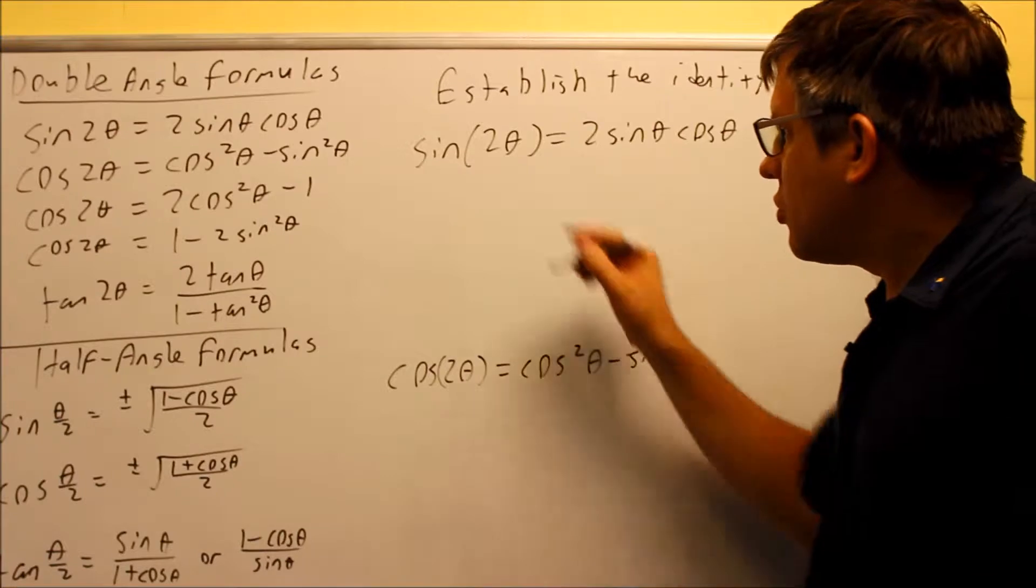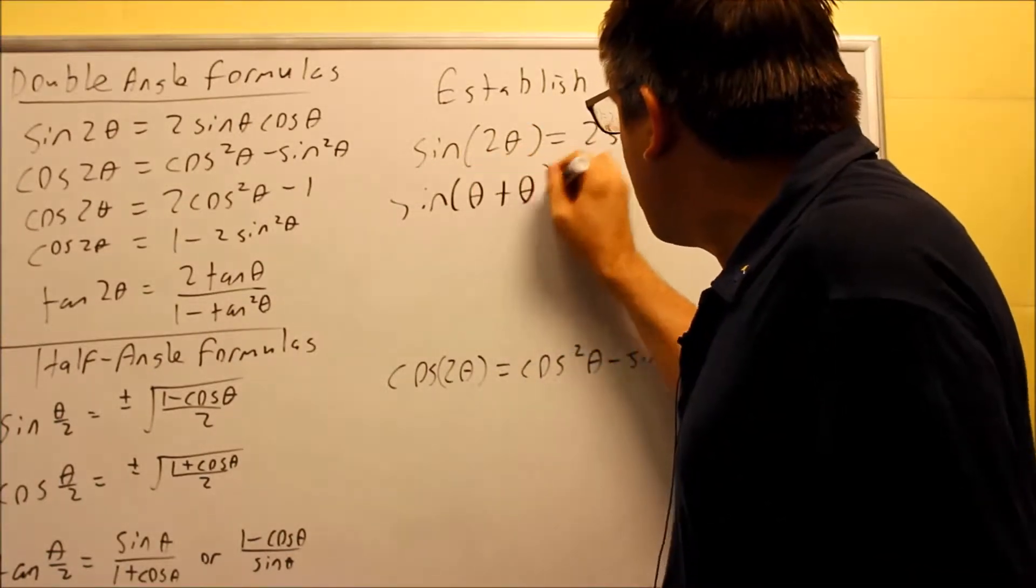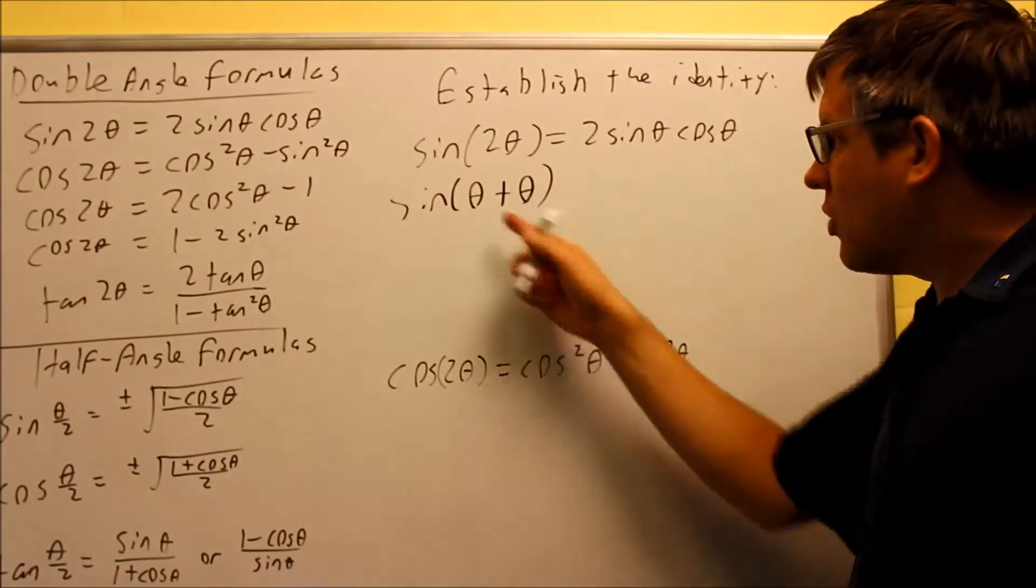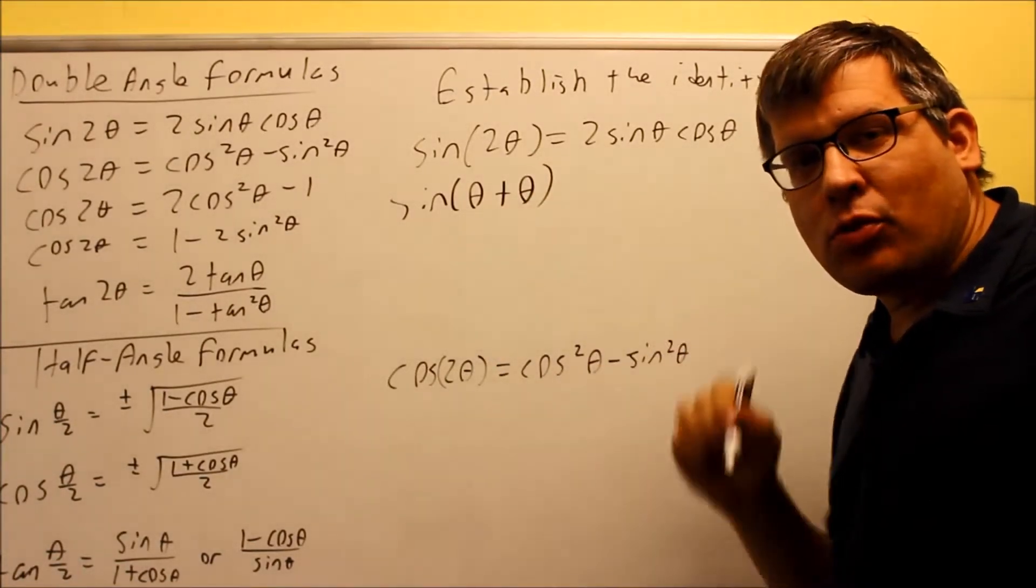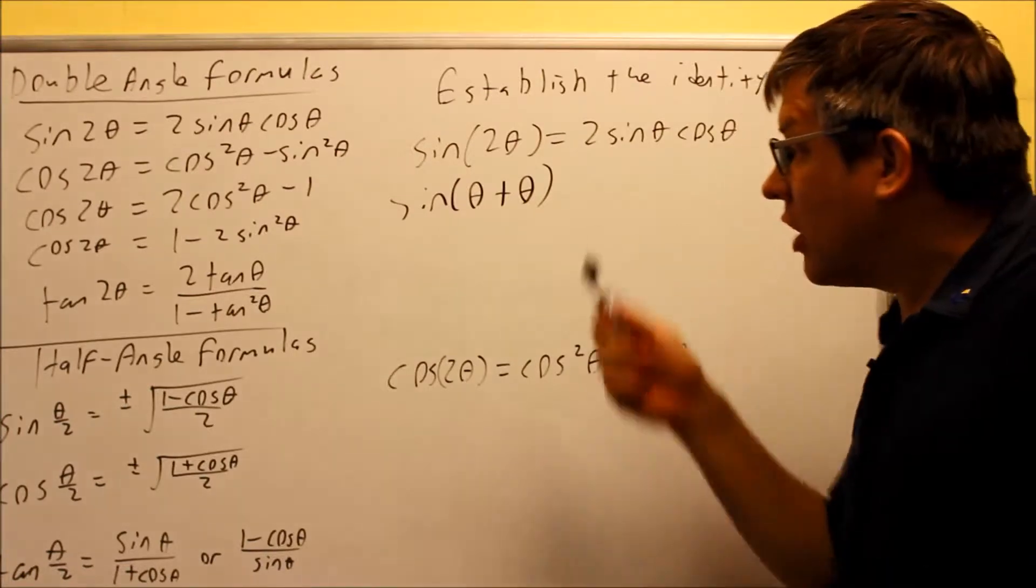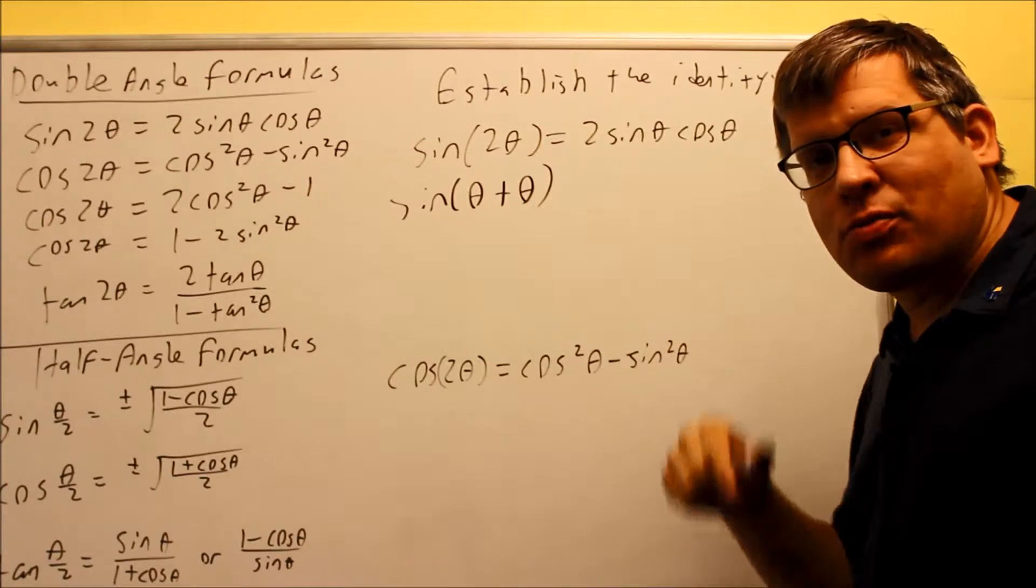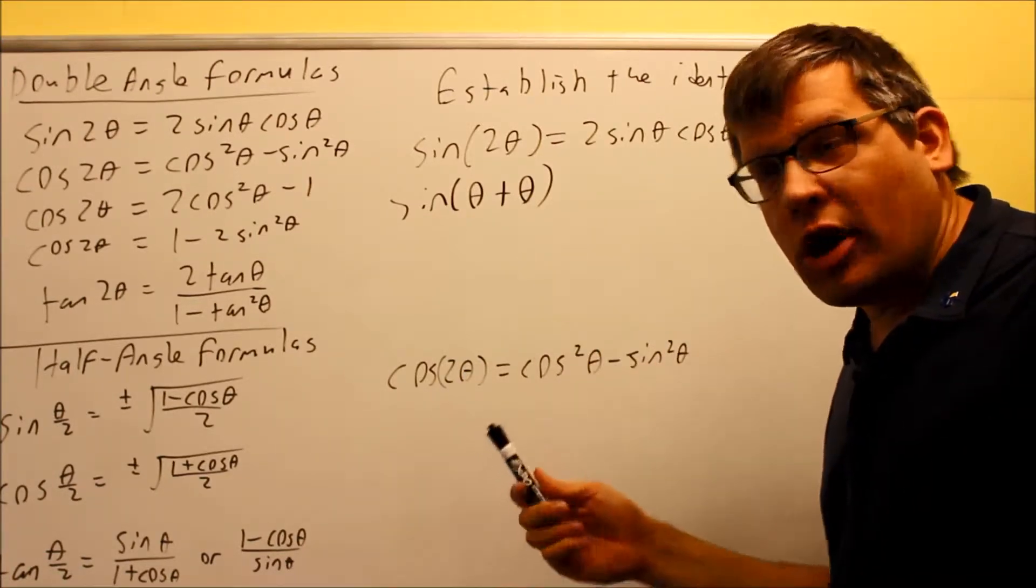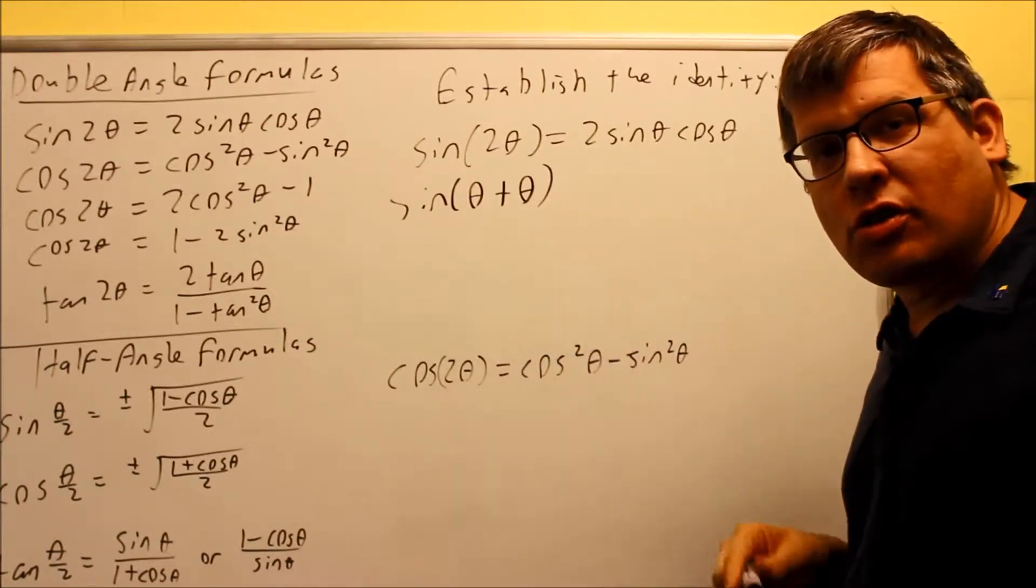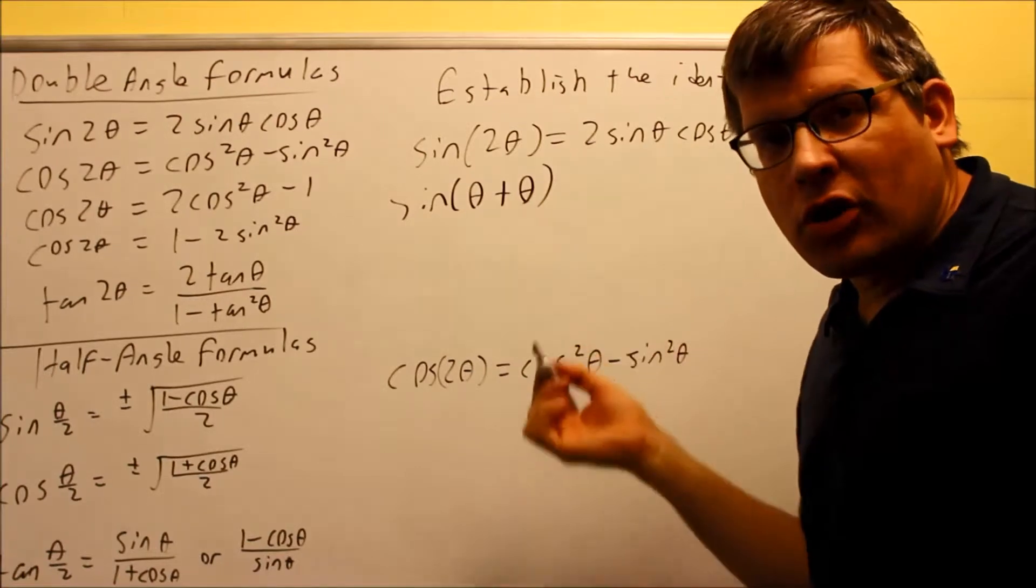What we're going to do is we're going to turn the sin(2θ) into θ plus θ. And because we have this, this is a form of sin(x+y). And in the previous session when I talked about the sum and difference formulas, I mentioned that sin(x+y) equals sin(x)cos(y) plus cos(x)sin(y). We're going to use that on this particular question here. So in this case, x and y are both going to be θ.